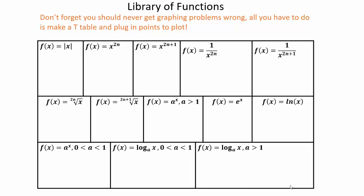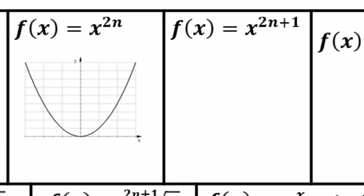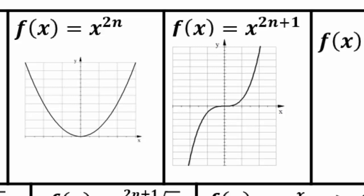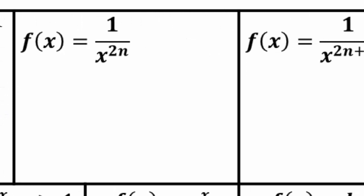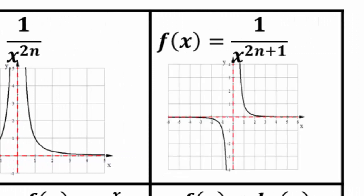Let's see if you got them right. Absolute value of x is the v-shape. x to the power 2n will be shapes similar to the parabola — the higher the power, the wider it is at the base and narrower on points bigger than 1 or smaller than negative 1. Odd powers will be the squiggly or S shape. One over x to an even power gives asymptotes at x equals 0 and y equals 0, with both ends facing up.